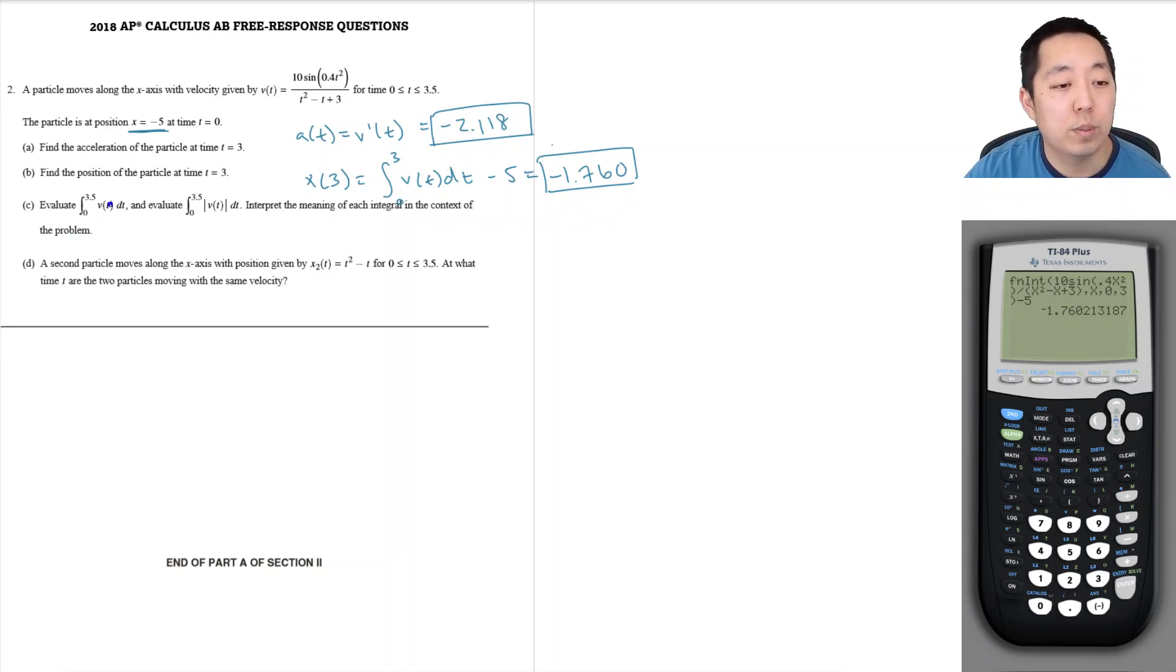Evaluate the integral 0 to 3.5 v of t and evaluate this. Interpret the meaning of each integral in the context of the problem. This one is change in displacement.